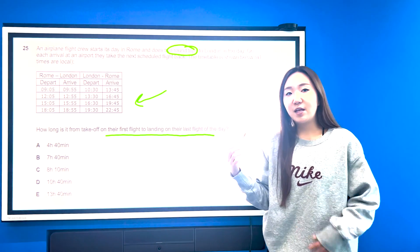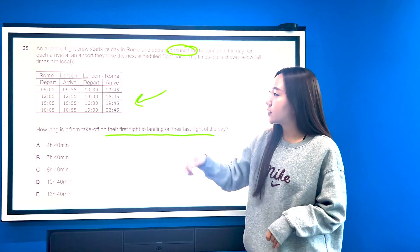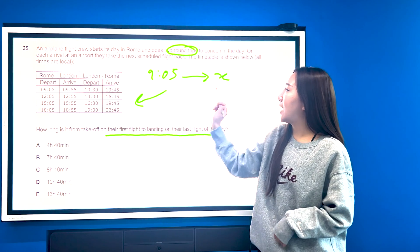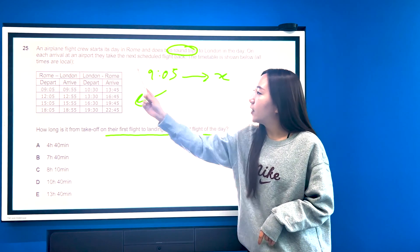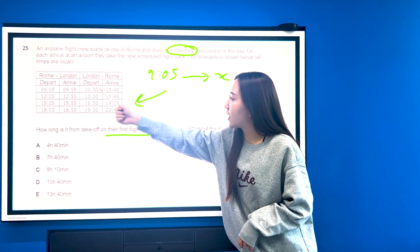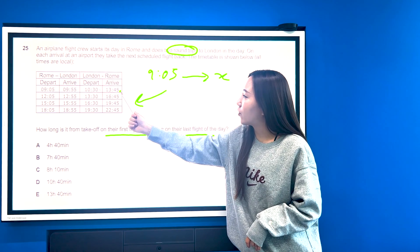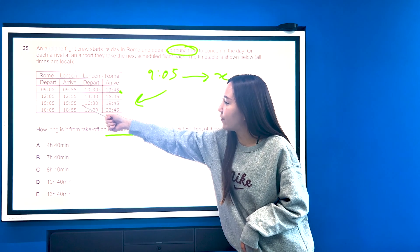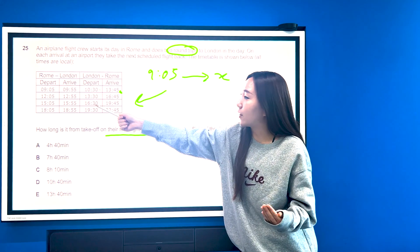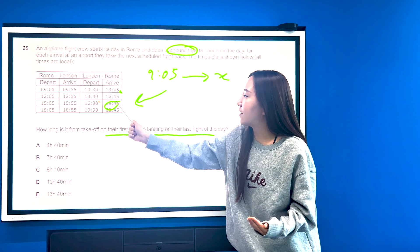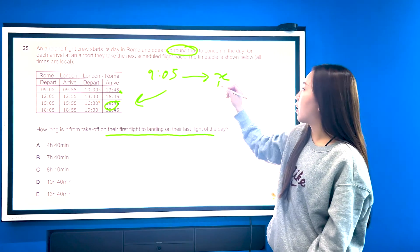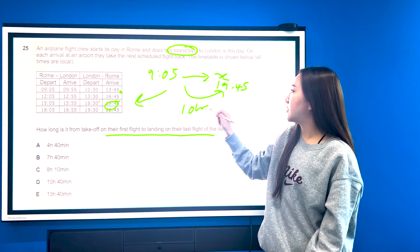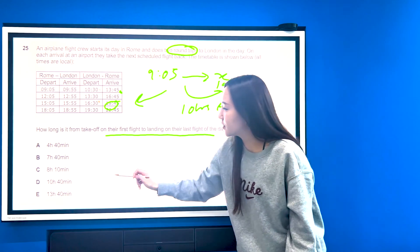Now again, if you're familiar with time and how to work with it, there should be no problem at all. So they're starting in Rome, so we'll take that 9:05, that's going to be our starting time, and we have to find what is our landing time and then work out the difference. So 9:05 to 9:55 London, we're then able to take this flight here to arrive in Rome at 1:45. We then miss the 12:05, so we take the 3:05, landing in London at 3:55. One final flight back home, this 4:30 flight arriving at 7:45, so 19:45. So the difference here is of course going to be 10 hours and 40 minutes, meaning that the answer is D.